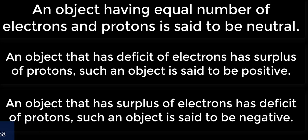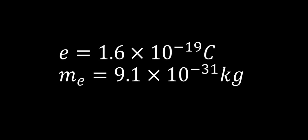An object that has surplus of electrons has deficit of protons. Such an object is said to be negative. Now, the magnitude of small known charges is equal to 1.6 × 10^-19 coulomb. It is the charge on one electron.